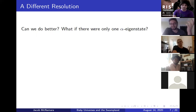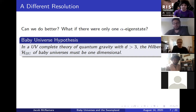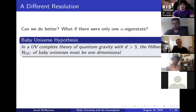What if there were only one alpha eigenstate? What if instead of a bunch of different alpha eigenstates, there were only one? In that case, we wouldn't have an ensemble — we would have a specific unitary theory. This is the basic physical hypothesis we're making in this paper. We're calling it the baby universe hypothesis. The statement is that in a UV complete theory of quantum gravity, with the caveat of more than three space-time dimensions, the Hilbert space of baby universes should be one dimensional. If we just take this as a given, it solves the issues I was just describing.